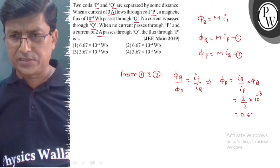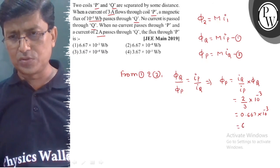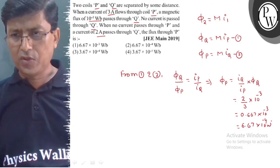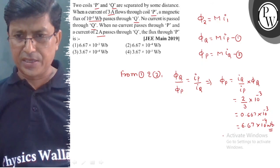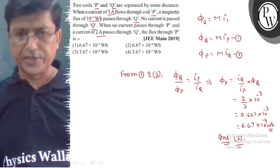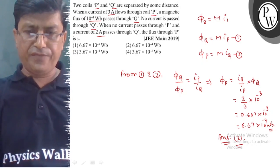This equals 0.667 times 10 to the power minus 3 weber, which is 6.67 times 10 to the power minus 4 weber. This is our answer, the correct option is option number 2. Hope you understood it well, best of luck.